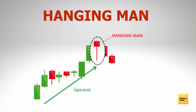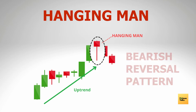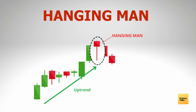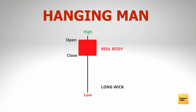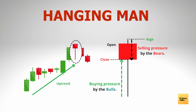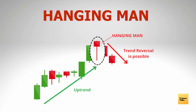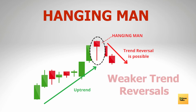A pin bar is called a hanging man when it appears at the top of a trend. Similar to the hammer, the hanging man is also a reversal pattern, but it is a bearish reversal pattern and signals the market high. In an uptrend, the bulls are in absolute control. A hanging man at the top indicates that the bears have managed to make an entry, emphasized by the long lower shadow. The bulls tried to push prices higher, but the bears brought in so much selling pressure that the price closed closer to the open, creating a small real body. There is a high probability the market trend would reverse, and the hanging man is a good indication that bearish sentiment is about to prevail.